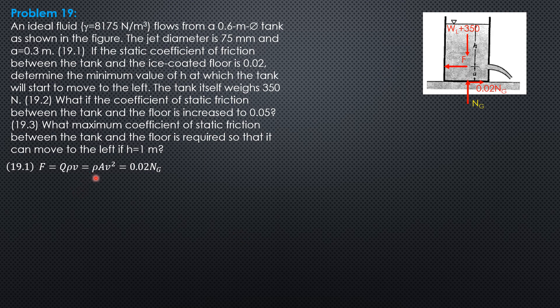Let's evaluate F, which is density 8175 over 9.81—that's the density—times area π times 0.0375 squared, area of the orifice.